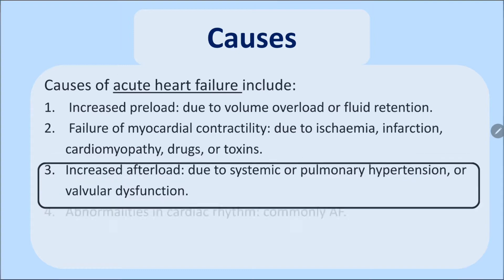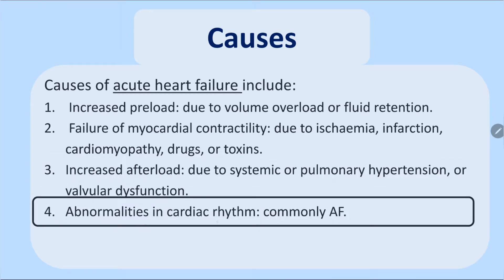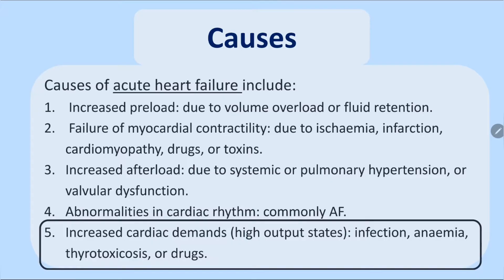Abnormalities in cardiac rhythm — for example, atrial fibrillation or ventricular tachycardia — can also cause acute heart failure. Increased cardiac demand is another category: normal heart, normal input and output, but there is a high-output state where demand exceeds normal. Examples include sepsis from infection, extreme or sudden anemia, thyrotoxicosis, and certain drugs that increase demand.